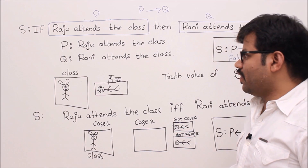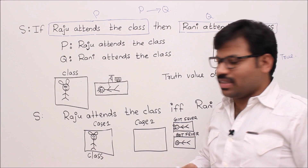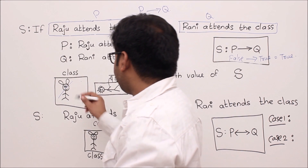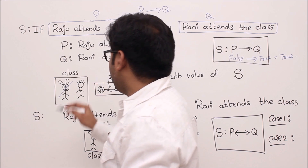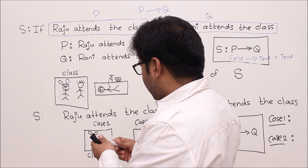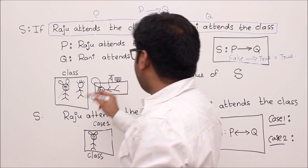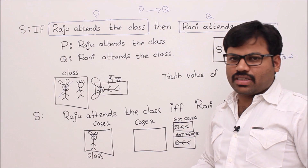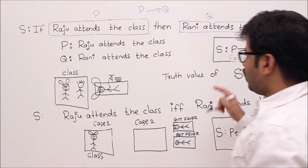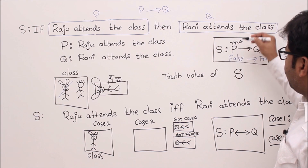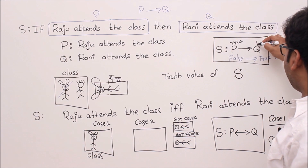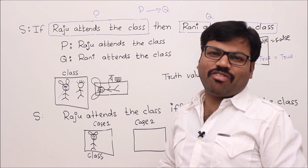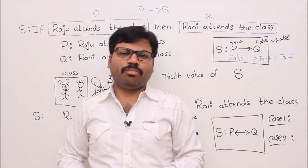Now let's see the case where P→Q can be false. If Raju is in the class and Rani is on the hospital bed, then P (Raju attends) is true and Q (Rani attends) is false. Then true→false equals false. Based on the inputs of P and Q, we find out the truth value of P→Q.